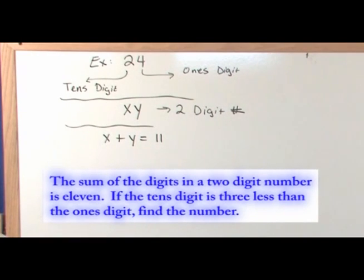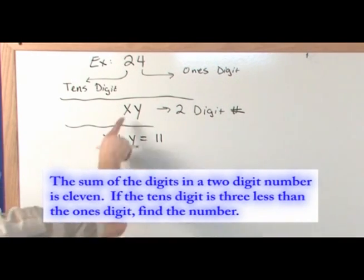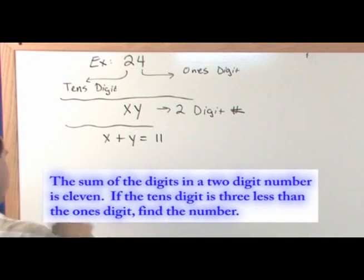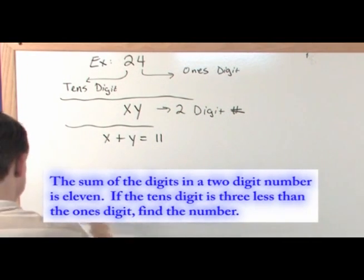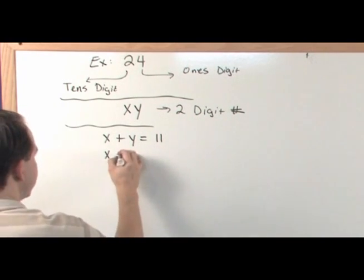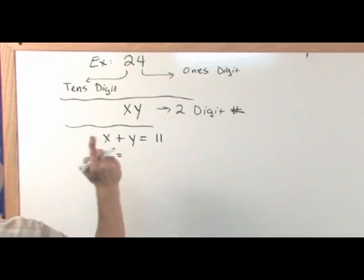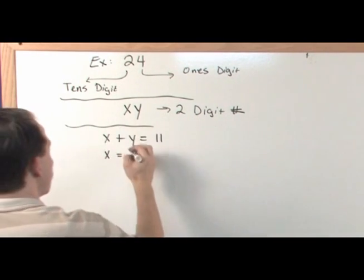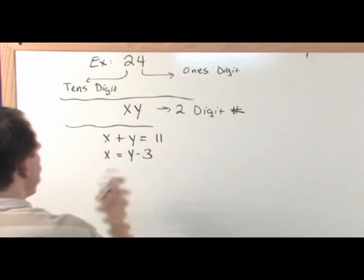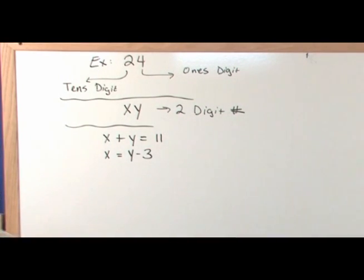Now let's move on to the next part of the problem. The tens digit, which is x, is three less than the ones digit. So that gives us our second equation: x equals y minus three.